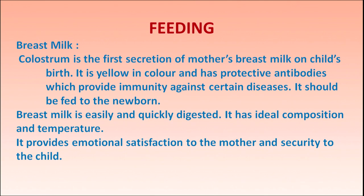The first point of care is proper feeding. When the child is born, the first feed is breast milk. The first few days' secretion is colostrum — the first secretion of the mother's breast milk at childbirth. It is yellow in color and has protective antibodies that provide immunity against certain diseases. It should be fed to the newborn and never discarded, because the immunity developed at that moment will be used throughout life.